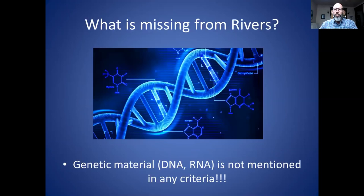Notice what is not in Rivers' criteria: there is nothing about genetic material — DNA or RNA — mentioned at all. You don't even need to look at genetic material to prove these criteria. Formally, genetic sequences have no role in proving that a virus causes a disease, according to the authors of the Nature paper.